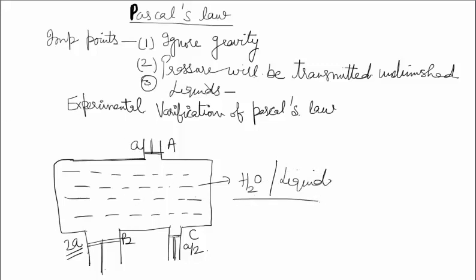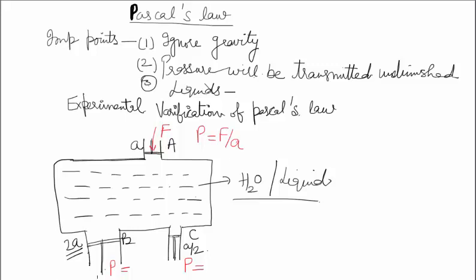As area of cross section of C is half, that is A by 2. यह हमें क्या show करता है? It shows that pressure is transmitted undiminished to all parts of the vessel. That is, P = F/A = 2F/2A = (F/2)/(A/2). मतलब जितना area of cross section ज्यादा होगा उतनी force ज्यादा लगेगी, जितना area of cross section कम होगा उतनी force कम लगेगी — pressure will be transmitted to all parts without any change, which is basically Pascal's law.